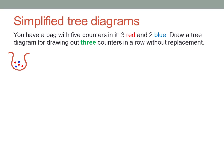It works like this. The first counter could be red or blue. The chance of getting a red one is three out of five, and the chance of getting a blue one is the other two out of five.